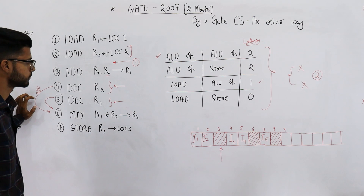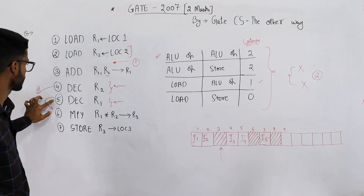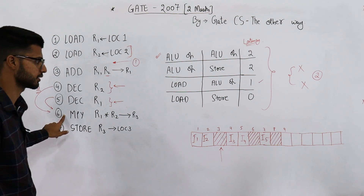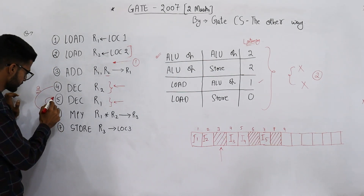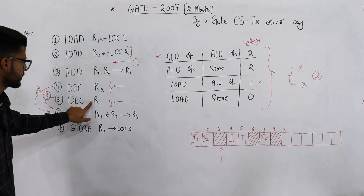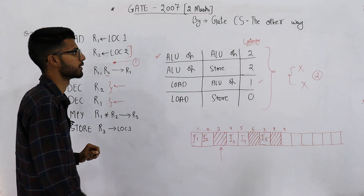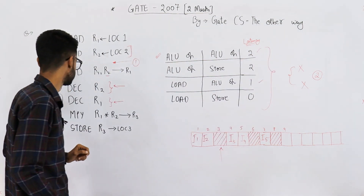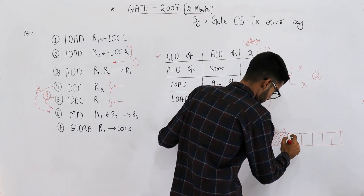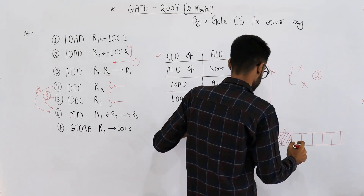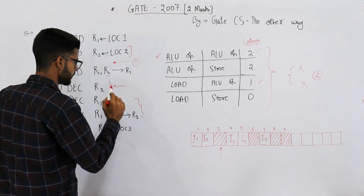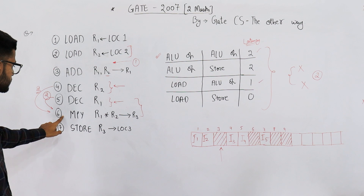After executing instruction five and adding one stall cycle, can we immediately execute instruction six? No — we also have to handle the five-to-six dependency. We need a stall of two cycles because decrement R1 is an ALU operation and multiply R1 comma R2 is also an ALU operation. R1 is produced by instruction five and used by instruction six, so two clock cycles are added for this dependency.